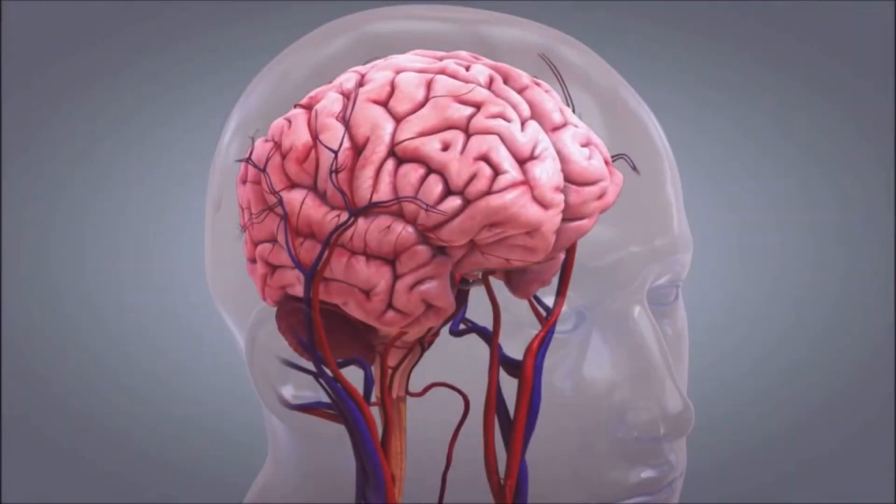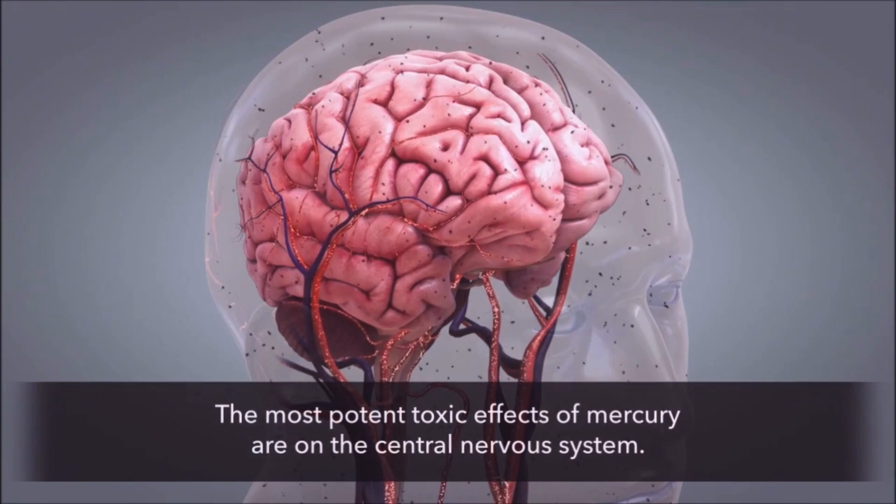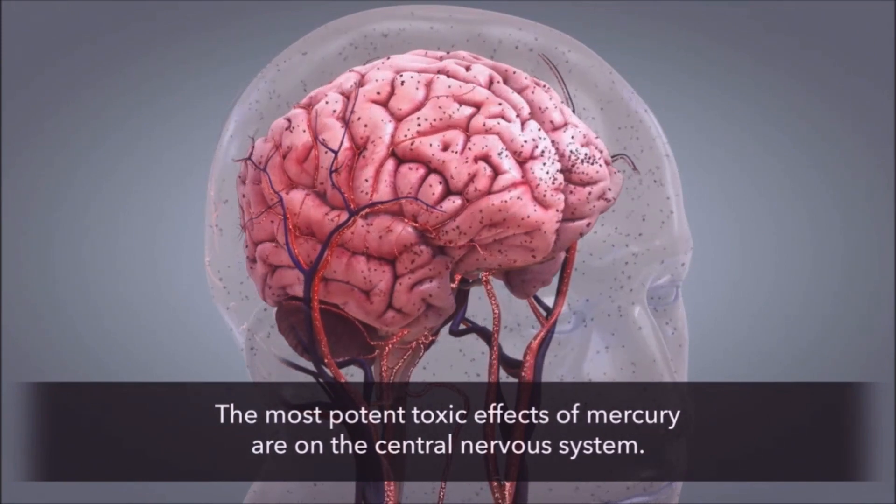The brain has a special structure called the blood-brain barrier. This structure shields the brain from toxins transported in the blood.